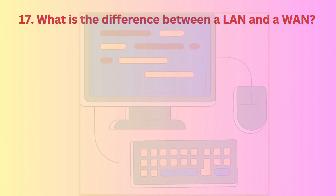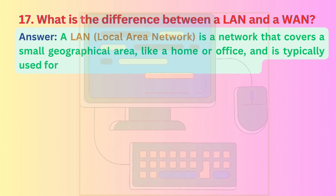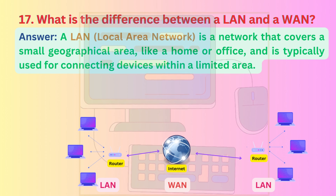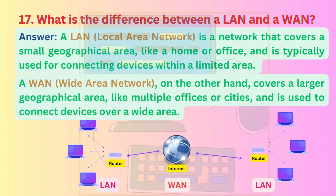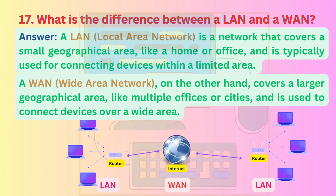Question 17: What is the difference between a LAN and a WAN? Answer: A LAN (Local Area Network) is a network that covers a small geographical area, like a home or office, and is typically used for connecting devices within a limited area. A WAN (Wide Area Network) covers a large geographical area, like multiple offices or cities, and is used to connect devices over a wide area.